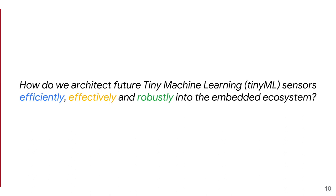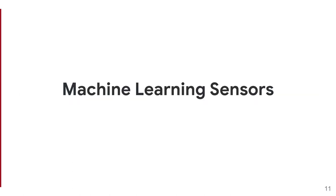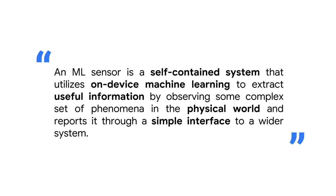The interesting question is: how do we architect future TinyML sensors efficiently, so they integrate into the existing ecosystem — no one wants to redo their whole infrastructure — and do this robustly with transparency? A machine learning sensor, an ML sensor, is a self-contained system that utilizes on-device machine learning to extract useful information by observing complex phenomena in the real world and reports it through a simple interface. Pete Warden's company Useful Sensors has been building a person sensor — detecting whether it spotted a person using a small camera — that's an example of a machine learning sensor.